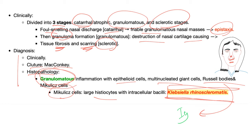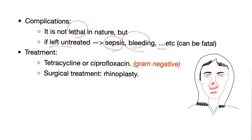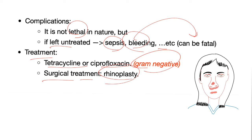Rhinoscleroma is not lethal, but if left untreated it can lead to sepsis and bleeding, which is fatal. Treatment is tetracycline or ciprofloxacin — ciprofloxacin because Klebsiella rhinoscleromatis is a gram-negative bacteria. Surgical treatment is called rhinoplasty.